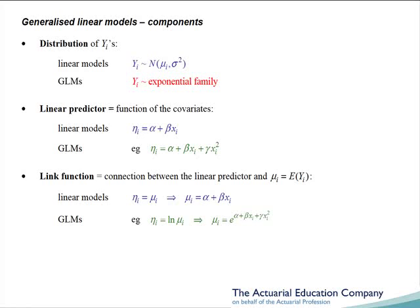So in summary, we are modeling the yi's. In general insurance, that may be the claim amounts or the claim numbers. In life insurance, it could be the lifetime of the individual. We will then have some covariates. These are all the variables that we think will affect our claim amounts, claim numbers, or lifetimes. And then our link function links these two things together.